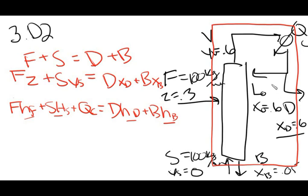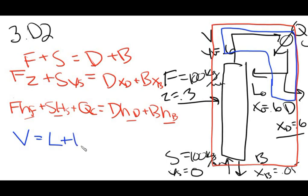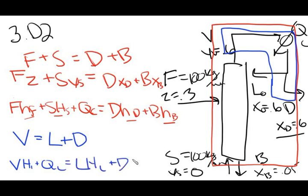We can also do a balance around the condenser, where anything coming in and out of the condenser is our system. So we can do a mass balance: V equals L plus D. And then for our energy balance: V·H_V plus Q_C equals L·H_L plus D·H_D. Looking at the first two overall equations, we have F and S which we know.